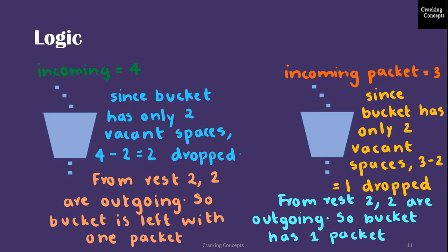Now we have the second packet which is of size 4. Bucket has 1 packet in it and 2 vacant spaces. So 4 minus 2, 2 packets need to be dropped. Again the number of packets in the bucket will be 3 now. From that since the outgoing rate is 2, we need to remove 2. So 3 minus 2 is 1. Bucket will be left with 1 packet.